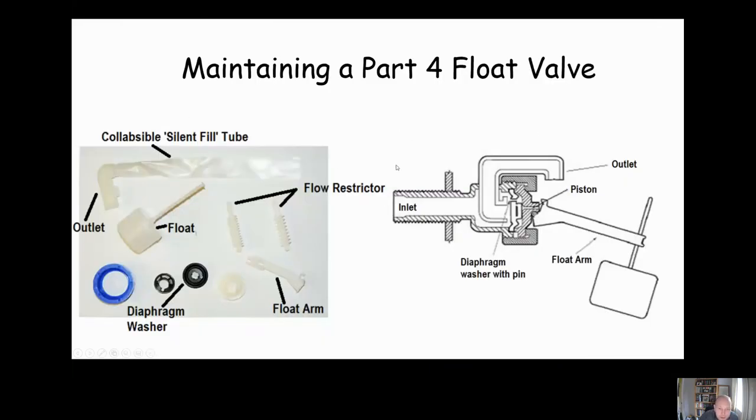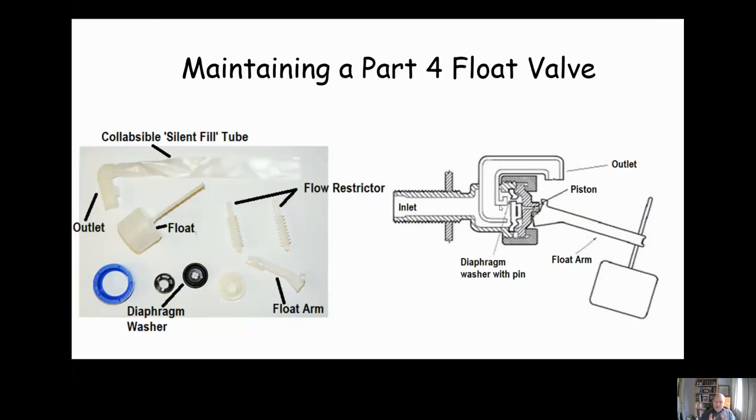Look very briefly now at a part four float valve, also known as a Torbek type float valve. These are pretty clever. They also have a diaphragm washer, but that washer has a small hole in it which actually allows water through onto the other side when it's open, which means you have equal pressures on both sides of the washer. This makes it much easier to switch it off. Instead of pushing against the full force of the water, you've got equal pressure water on the other side already, which means the amount of force required to switch it off is significantly reduced.